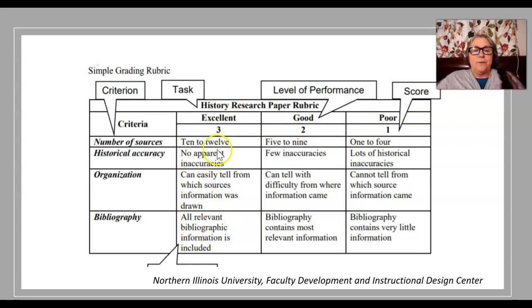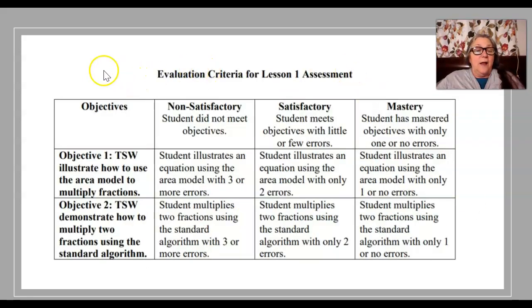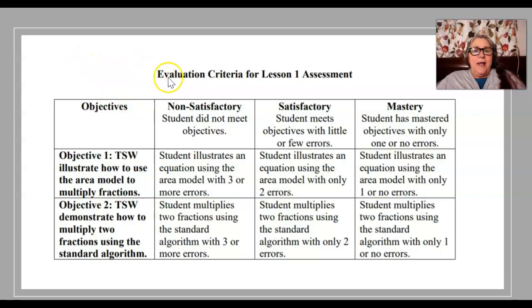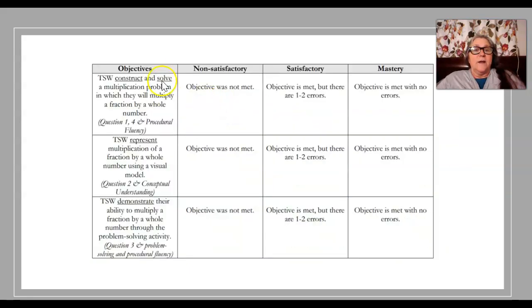A lot of these are ones that students have made and they've given me permission to share. Here's one: the objective is 'the student will,' and then what would be considered mastery, not satisfactory, and satisfactory. It's a little different — much more sparse — but would get the job done.